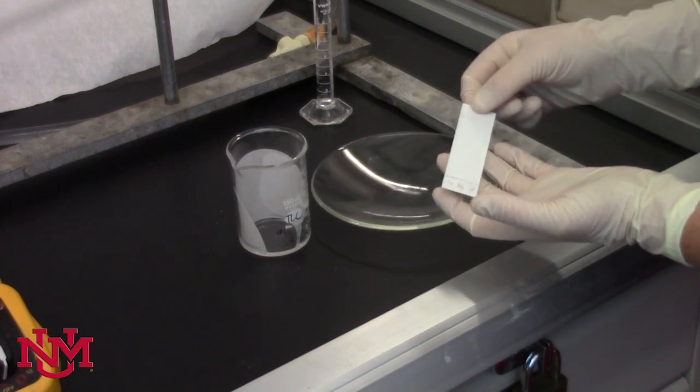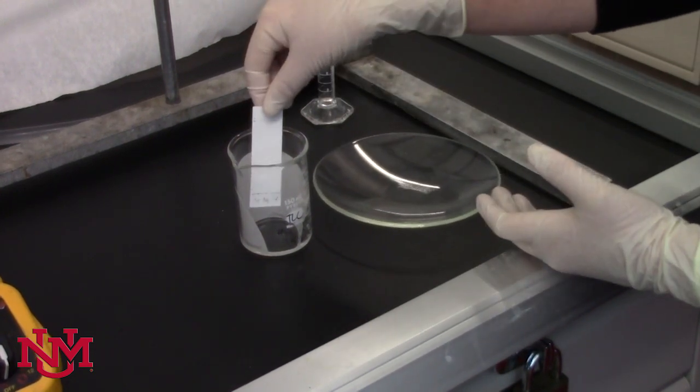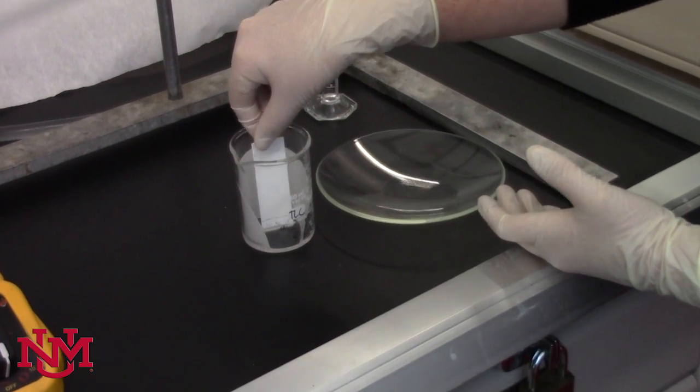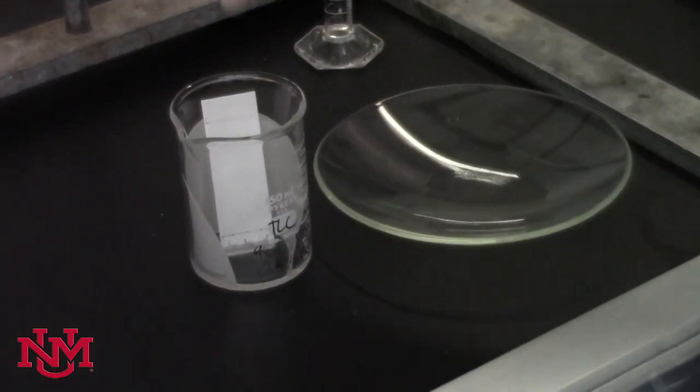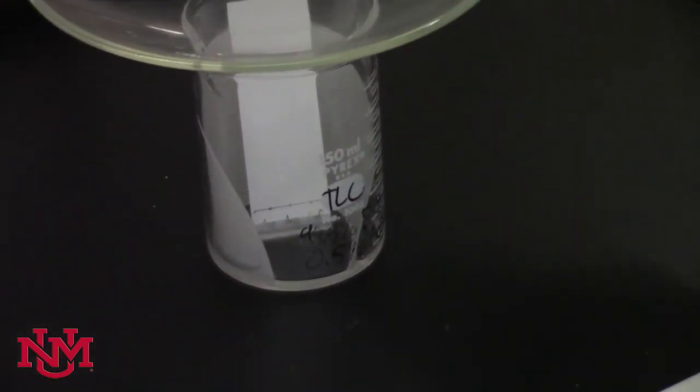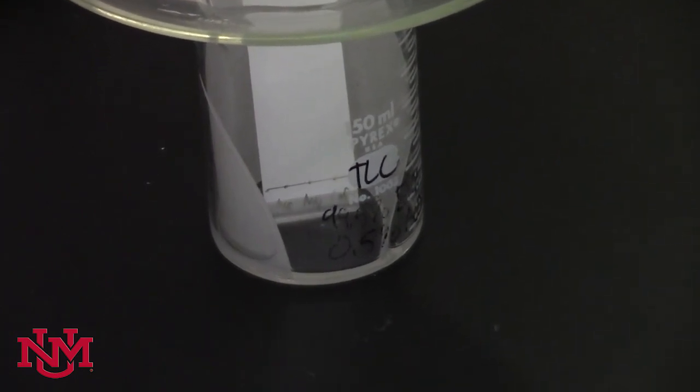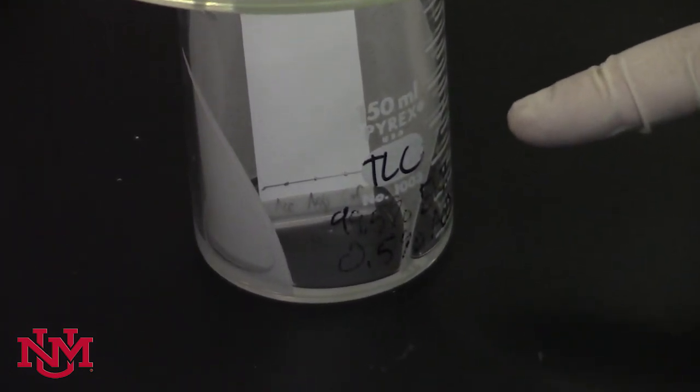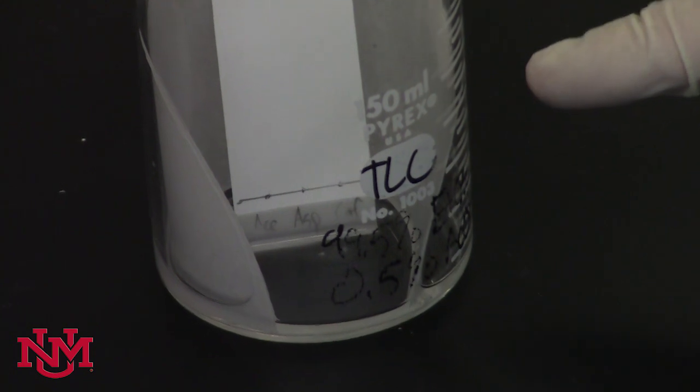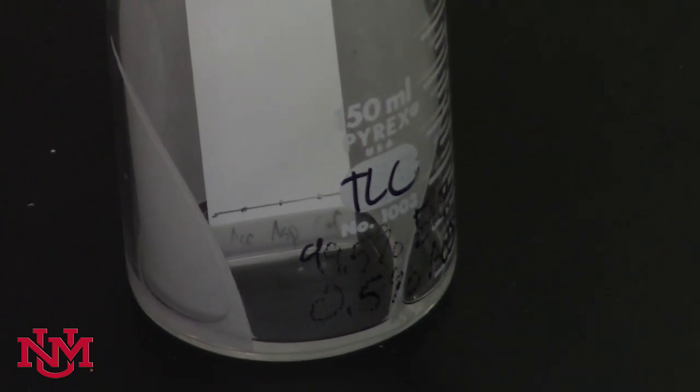Remove the lid and drop the TLC plate into the chamber, keeping it upright and resting it against the side of the beaker. Replace the lid and wait until your solvent, as you can see creeping up the TLC plate, has reached your top line that you marked.